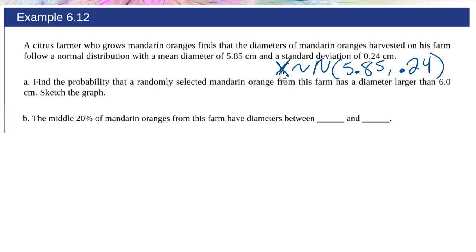Find the probability that a randomly selected orange from this farm has a diameter larger than 6 centimeters. Sketch the graph. When they say sketch the graph, I highly recommend that you always sketch this graph. Just sketch this normal distribution in the center. We always have the mean, which is 5.85.